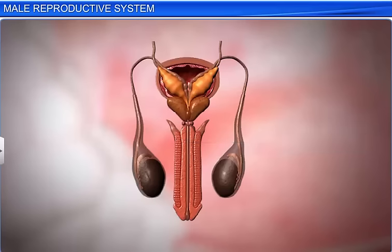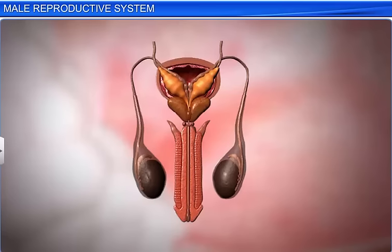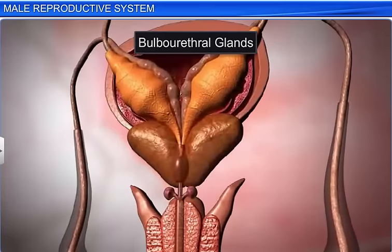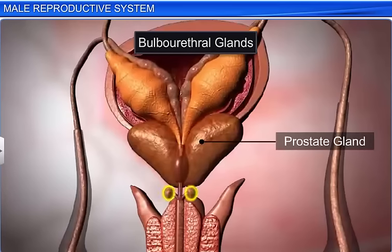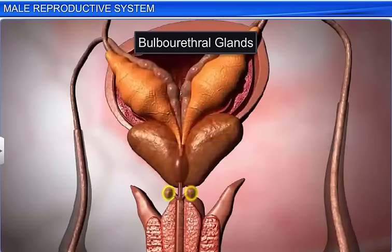The prostatic fluid contains calcium, citrate, and phosphate ions. The bulbourethral glands, or Cowper's glands, are pea-sized structures lying posterior to the prostate gland and at the base of the penis. Their secretions help in the lubrication of the penis.